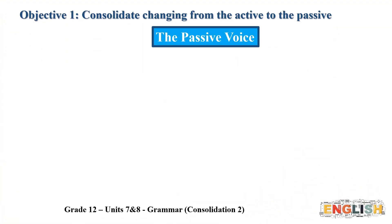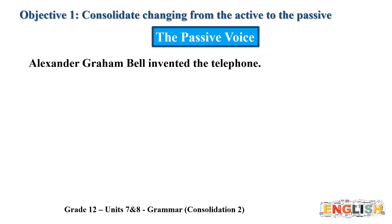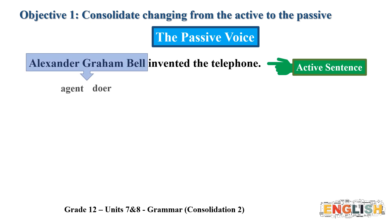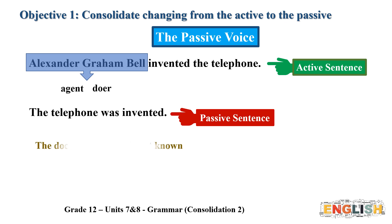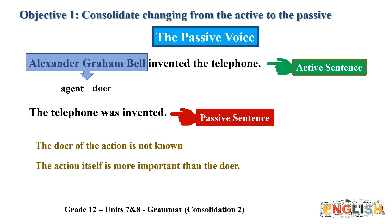Let's start with the first grammar point: the passive voice. Look at this sentence — is it active or passive? It's an active sentence. The agent or doer appears at the beginning of the sentence. Now, what about this one? It's a passive sentence. Normally, we use the passive if the doer is not known or the action is more important than the doer.